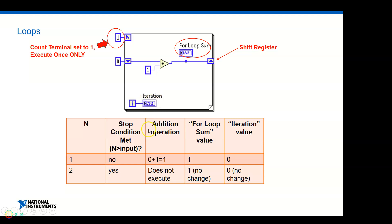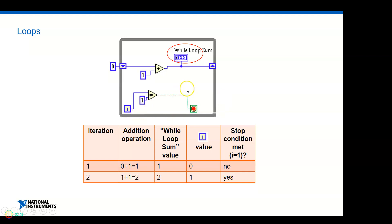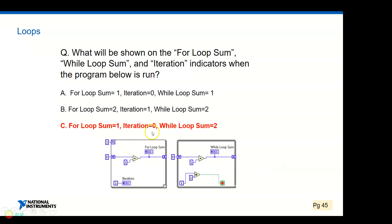For the While Loop case: it's similar - you add one to the initial value zero. On the first iteration the Add function outputs one and the iteration count shows zero. Comparing: is zero equal to one? No - it proceeds with another iteration. One plus one equals two. The sum value is two, the iteration counter is one. Is one equal to one? Yes - terminate. The answer is C.